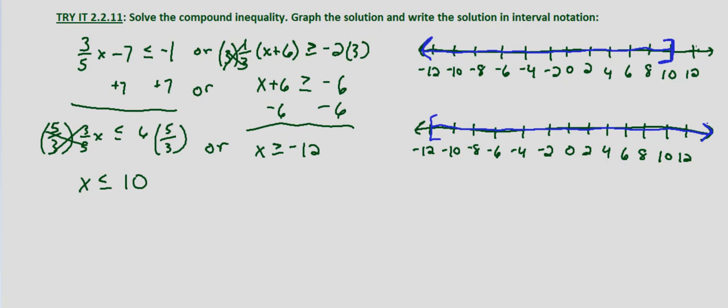Now if this were an AND compound inequality, we'd just be looking at the values between and including negative 12 and 10. But this is an OR compound inequality, so it's what satisfies either one. So if we combine these graphs, what satisfies either the first one or the second one? Well, we have one starting at 10 and going to the left, one starting at negative 12 and going to the right. So if we combine them, we end up with a number line that goes infinitely in both directions.